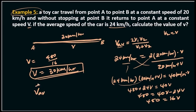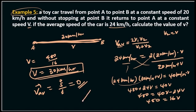Average velocity is displacement divided by time. If the displacement is zero — for example in a round trip — then the average velocity is zero, even though the average speed may not be zero.